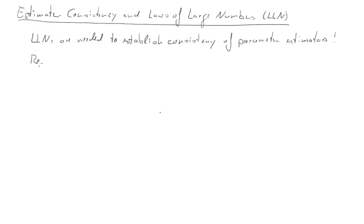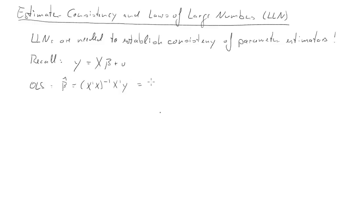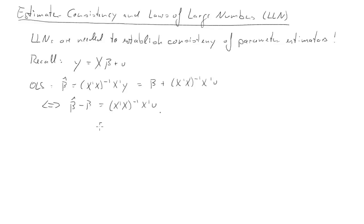Let me first set out the problem. We'll restate a linear regression model again. The S-parameter estimator for beta is beta-hat equals (X'X)^{-1} X'y. If we replace y with the process, we can establish that beta-hat is a function of beta and u, and then we can solve for beta-hat minus beta, which equals (X'X)^{-1} X'u.